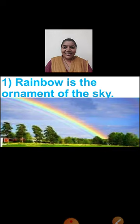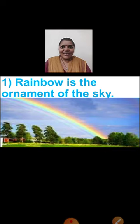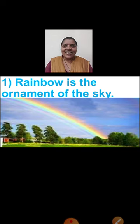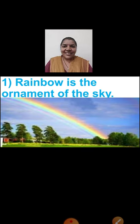See children, it looks very beautiful. Your mother must be wearing some ornaments to look beautiful. Similarly, children, in the sky after the rain, when the rainbow appears, the sky looks very beautiful. So we are going to write the first sentence: Rainbow is the ornament of the sky, because it increases the beauty of the sky. I hope children you all are understanding.